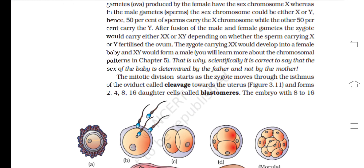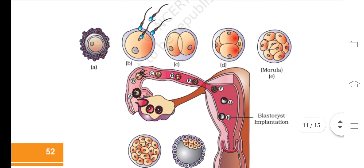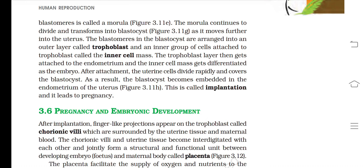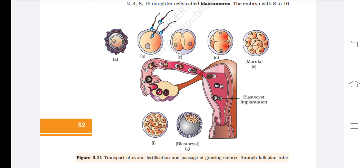The mitotic division starts as the zygote moves through the isthmus of the oviduct — called cleavage — towards the uterus, forming 2, 4, 8, 16 daughter cells called blastomeres. The embryo with 8 to 16 blastomeres is called the morula. After the morula stage comes the gastrula, then the blastocyst, which gets implanted in the endometrial lining of the uterus.